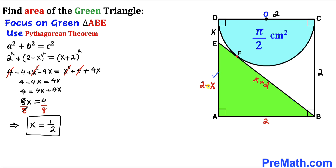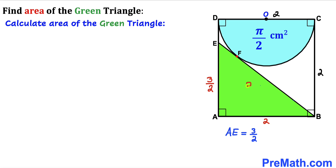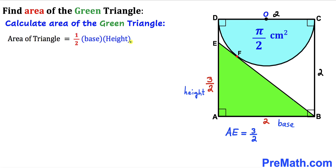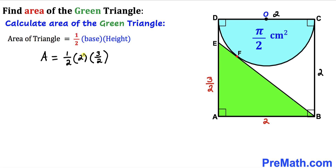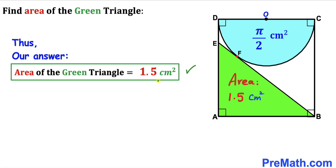Substituting x = 1/2, the height AE = 2 − 1/2 = 3/2. Now calculating the area of the green triangle using Area = ½ × base × height: base = 2 and height = 3/2, so Area = ½ × 2 × 3/2. The 2 and ½ cancel, giving Area = 3/2 = 1.5 centimeter square. Thus the area of the green shaded triangle is 1.5 cm².